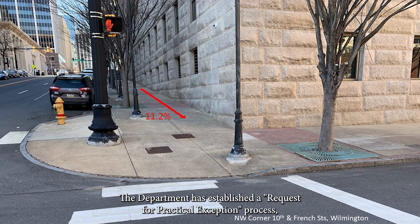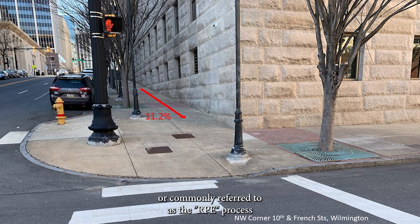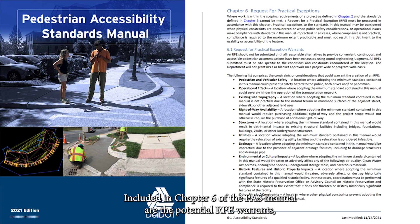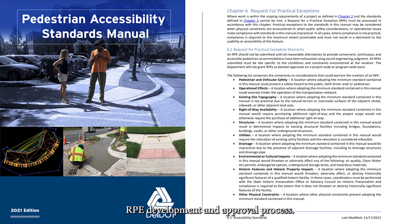The Department has established a Request for Practical Exception process, commonly referred to as the RPE process, to document such locations. The RPE process is fully detailed in Chapter 6 of the DELDOT PASS Manual, which includes the potential RPE warrants, the RPE documentation requirements, and a discussion of the Department's RPE development and approval process.